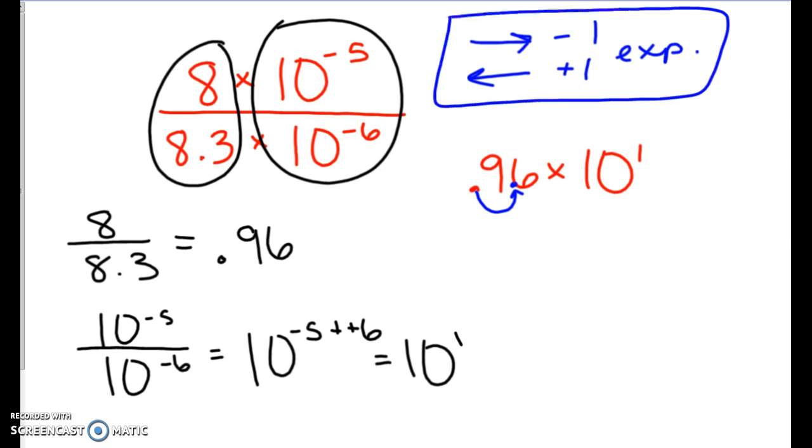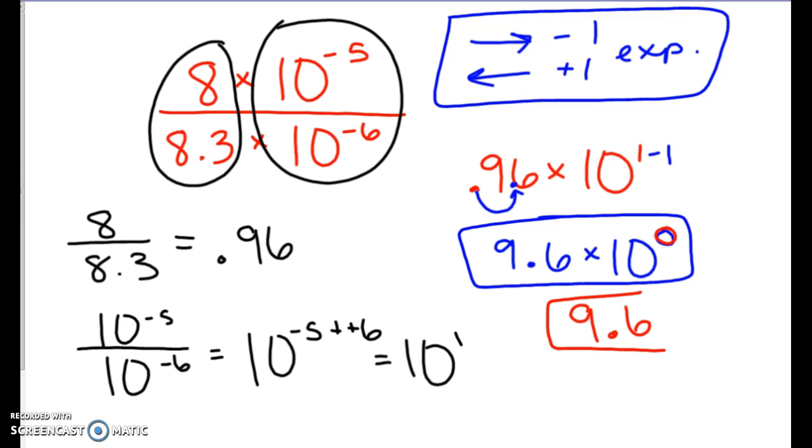So 9.6 times 10, 1 minus 1. We get a 0 up there as our final answer. And usually the directions will tell you to keep your answer in scientific notation. So we are just going to leave it like that. We know that anything to the 0 power ends up just being 1. So our answer ends up being just 9.6. But usually they want you to leave it in scientific notation.